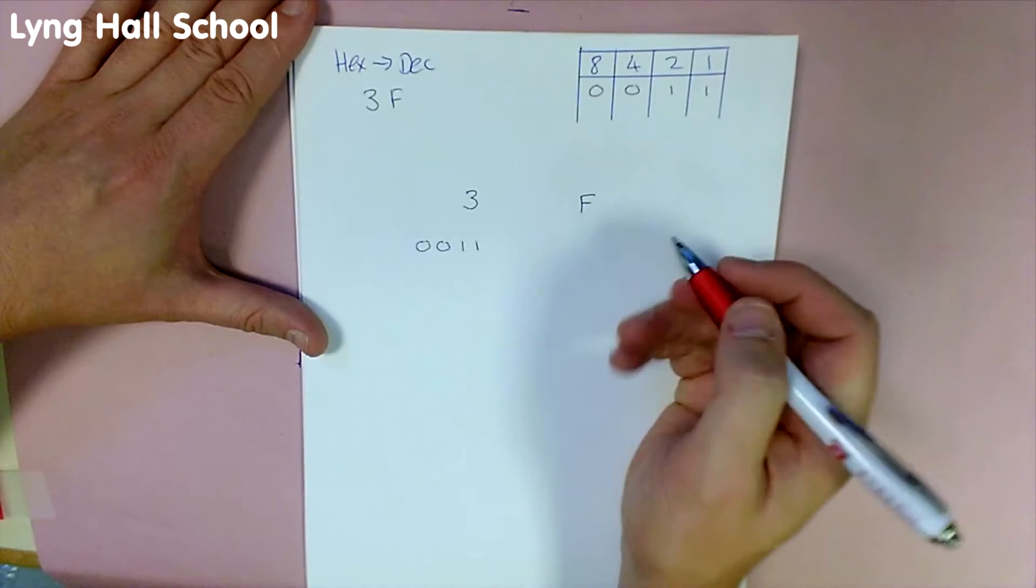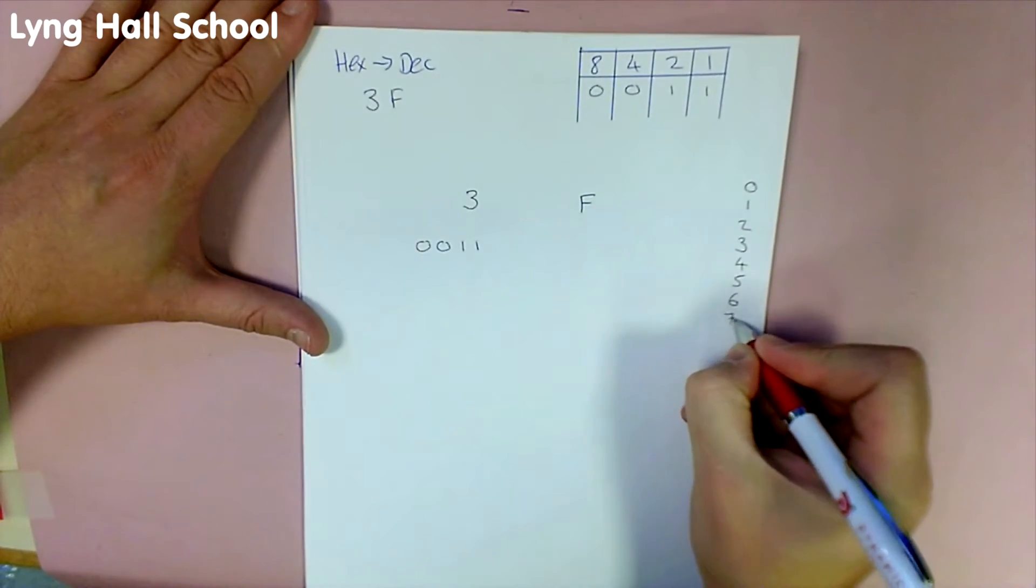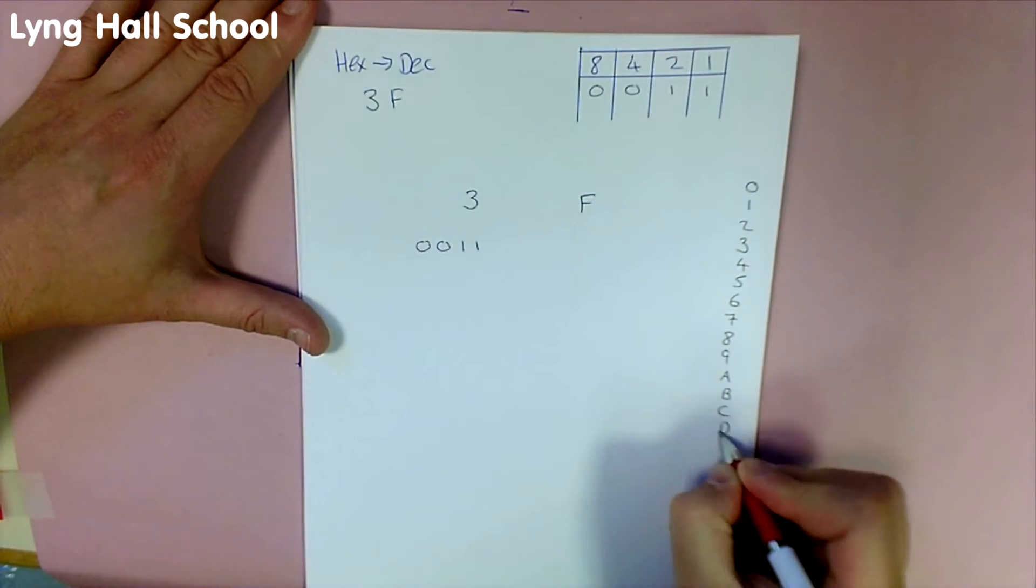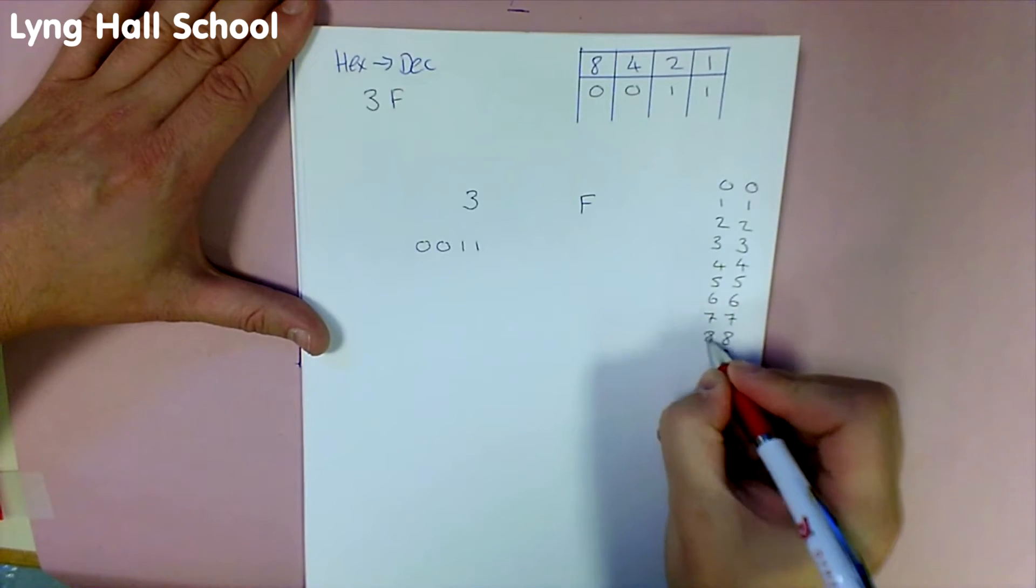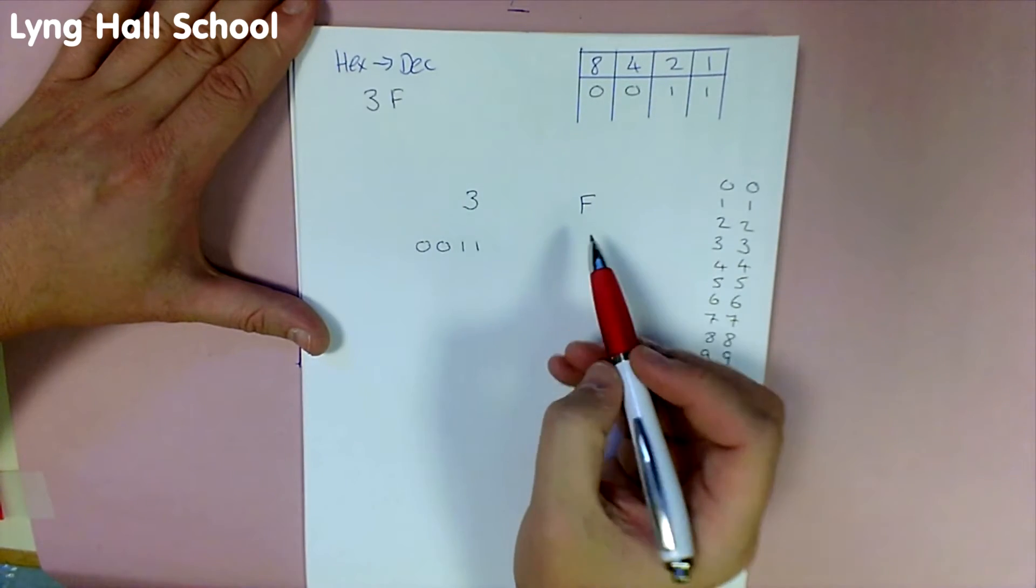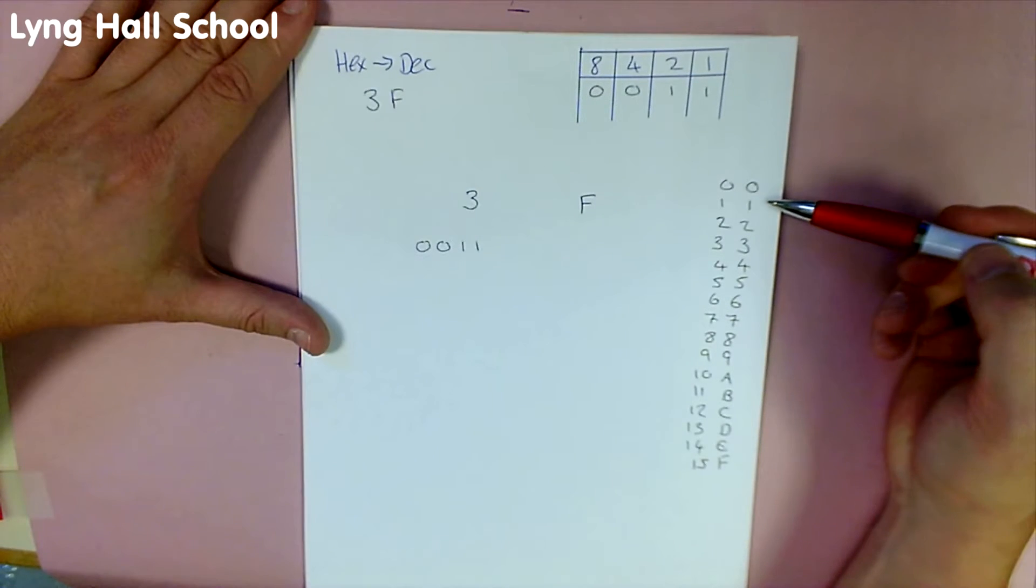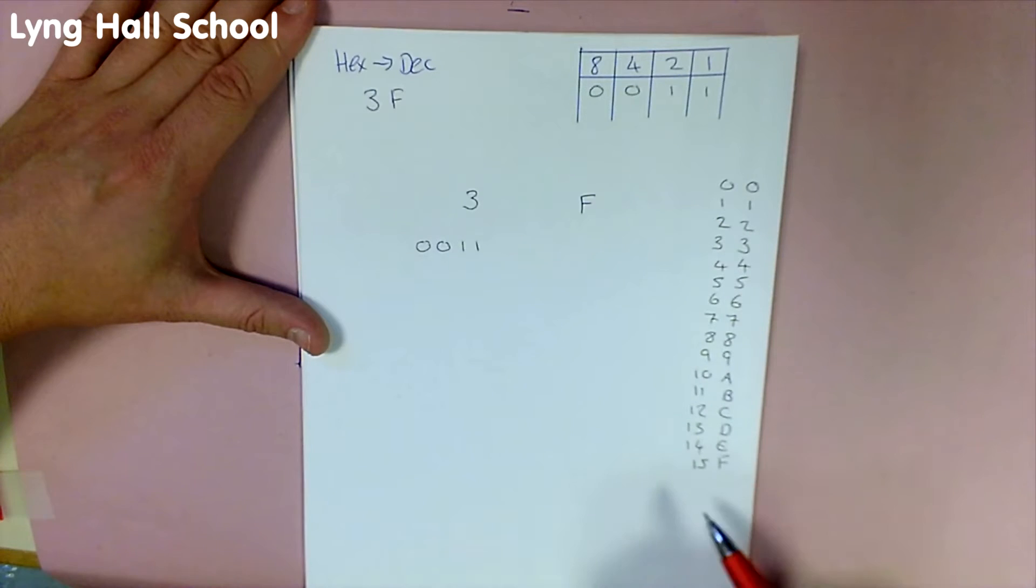F will be more difficult as we'll need a conversion chart. We can now see that F, if we look down our conversion chart with hexadecimal on the right and decimal on the left, that 15 is the same as F.